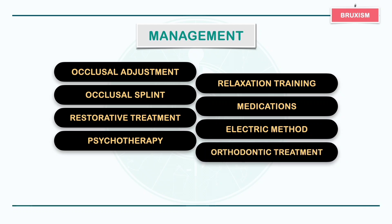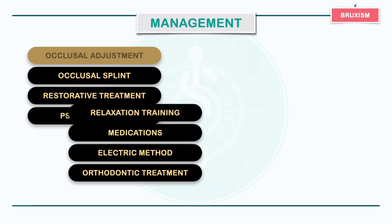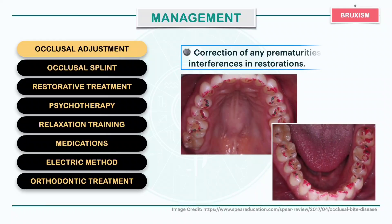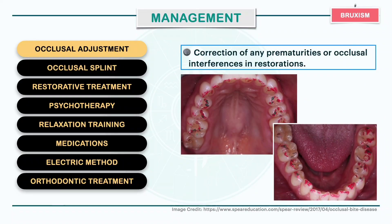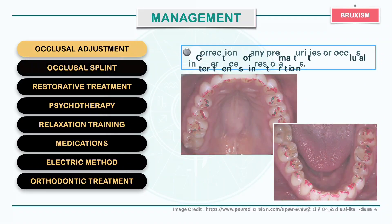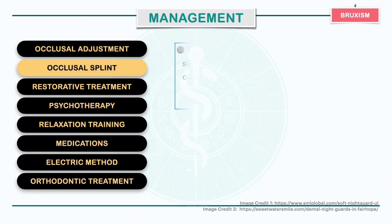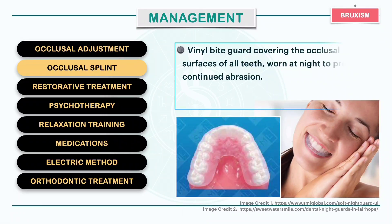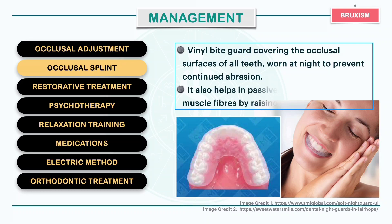Occlusal adjustment involves correction of any prematurities or occlusal interferences in restoration. Occlusal splint involves a bite guard worn at night to prevent continued abrasion. It can also help in passive stretching of painful muscle fibers by raising the bite.